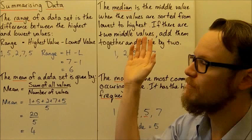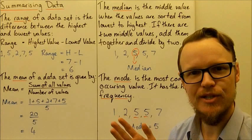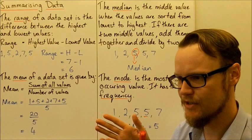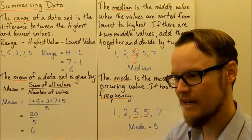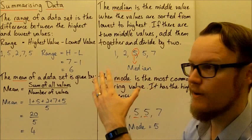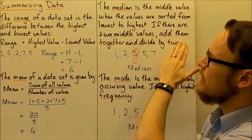Another average we can look at is called the median. Median essentially means the middle — it's the middle number. Just like when driving down the highway, the median strip is the strip of grass in between the two different directions of traffic — it's in the middle. So when we're looking at the median, it's the middle value. We need to sort the values in order from lowest to highest, and the median is the middle value.